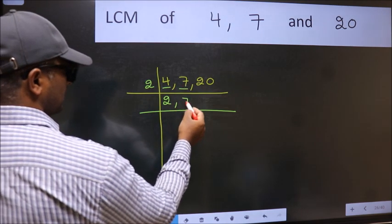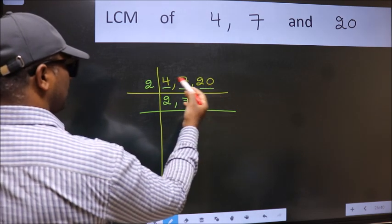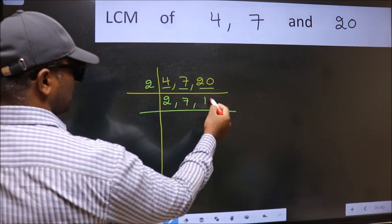The other number 20, when do we get 20 in the 2 table? 2 times 10 is 20.